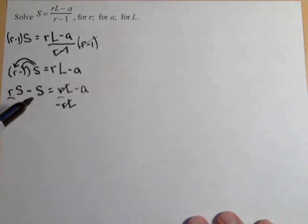Now, all the terms that do not have an R in them need to go to the other side. So that means this is already good. We need to move the S over, and we can do that by adding it.